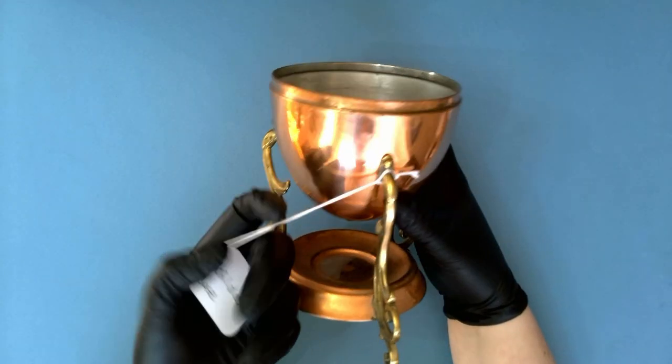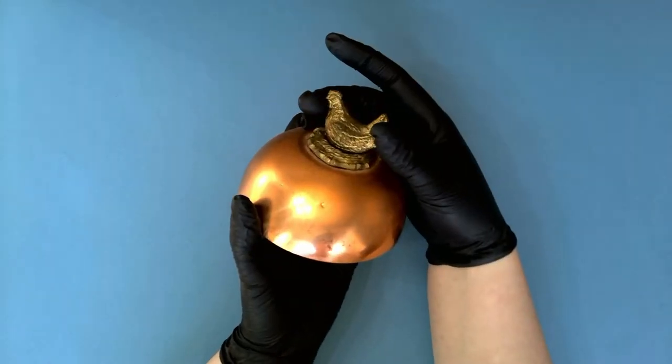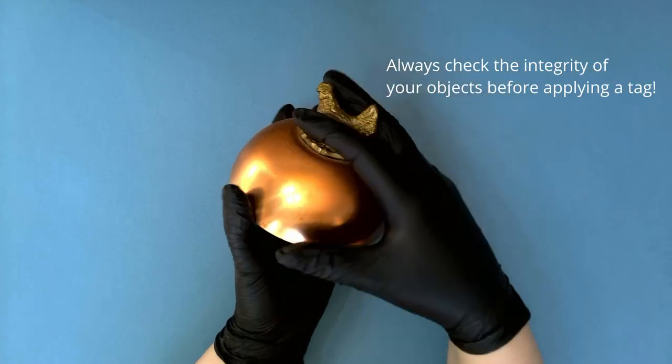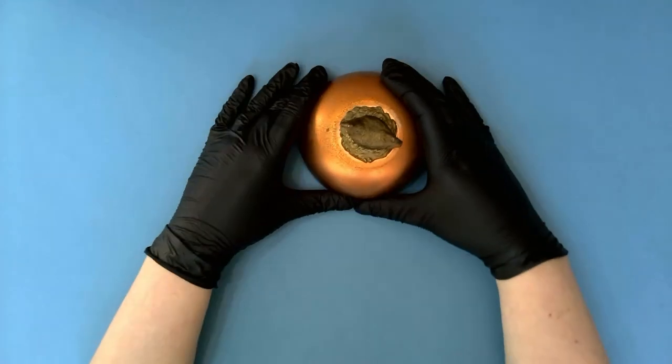We'll move on to the lid. Alright, here's the next piece, the lid. I want to make sure that the pieces aren't loose or damaged in any way before I put my tag on there.